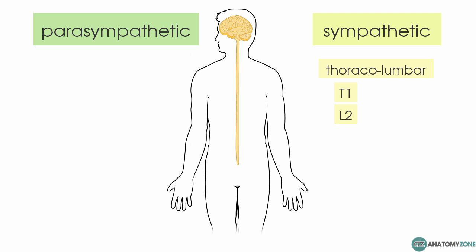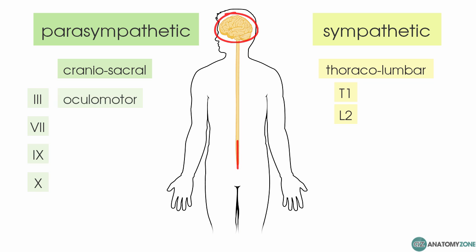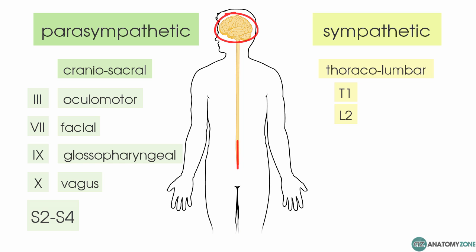The parasympathetic nervous system, on the other hand, is referred to as craniosacral. It has cranial nerve components and sacral components. The cranial nerves involved are cranial nerves 3, 7, 9, and 10 — the oculomotor, facial, glossopharyngeal, and vagus nerve — and the sacral components are sacral regions S2 to S4.